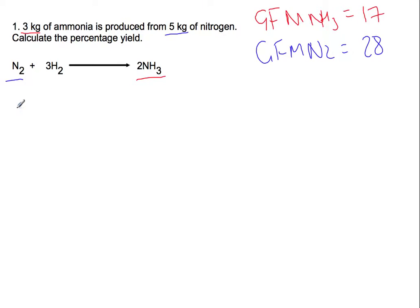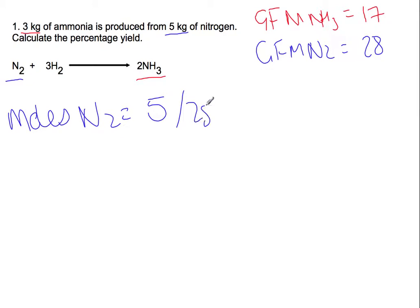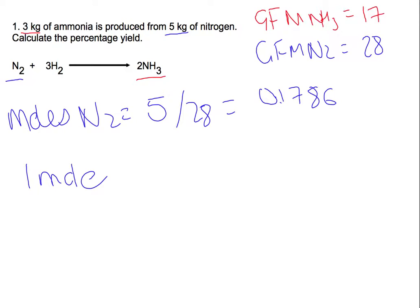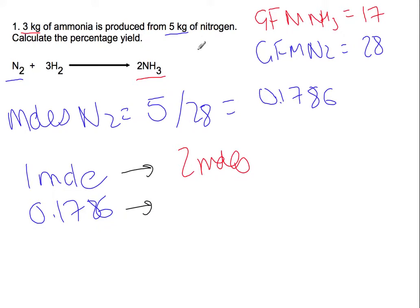Using the GFM of nitrogen we can work out how many moles of nitrogen we used. Taking mass divided by gram formula mass gives us 0.1786 moles. In this case we have a 1 mole of reactant to 2 moles of product ratio, so we're going to multiply our moles of reactant by 2 to get the moles of product we should have produced — giving us 0.357 moles of ammonia.